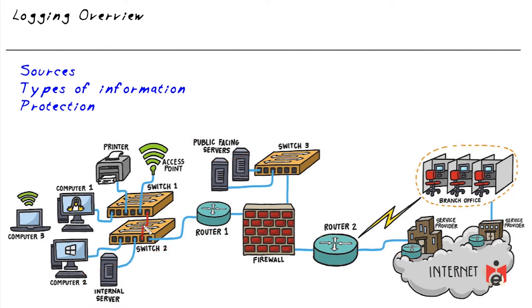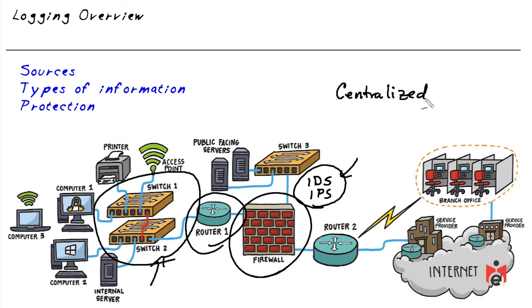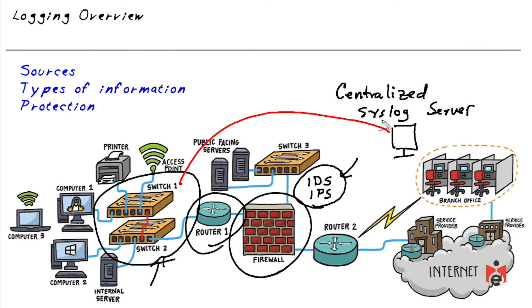Network infrastructure devices including switches, routers, and firewalls are also logging sources. Network-based intrusion detection and prevention systems are additional sources. In many cases we'll centralize logging to a centralized server so we have one location to correlate events from multiple devices. Syslog is an example of a centralized server used to consolidate syslog messages.